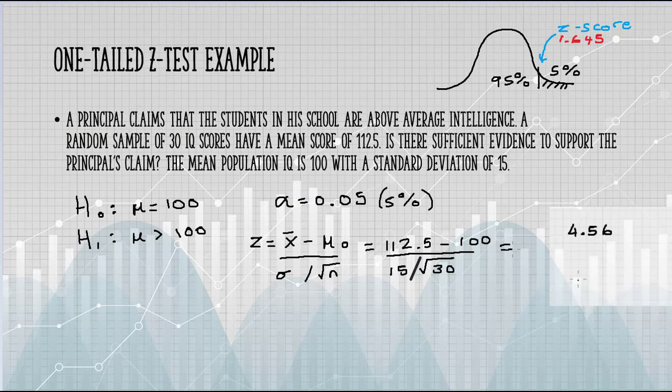That's going to fall above our cutoff point in this area here. And as that's greater than the Z critical value, we can reject the null hypothesis.